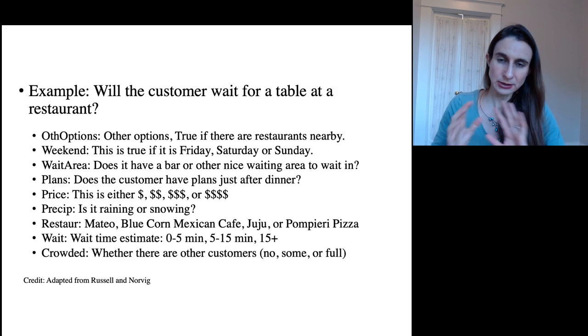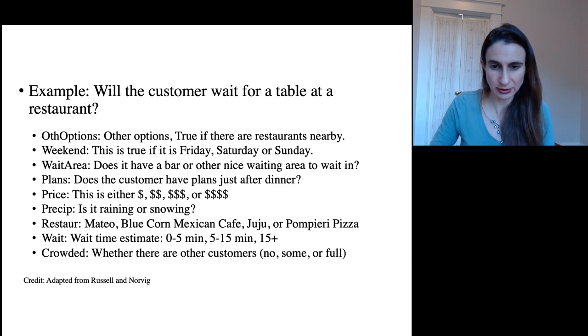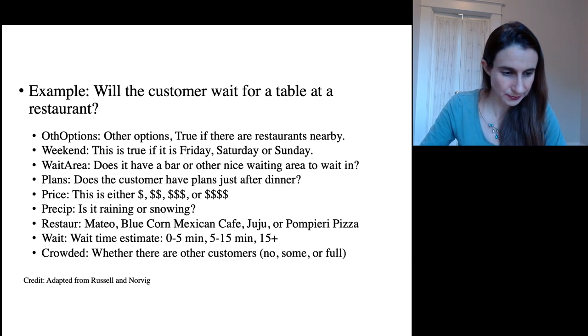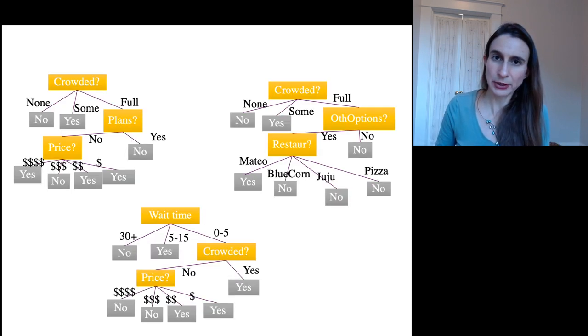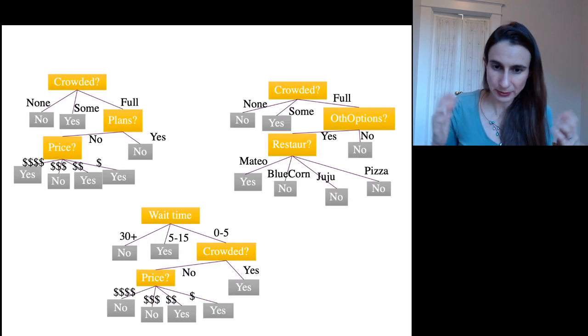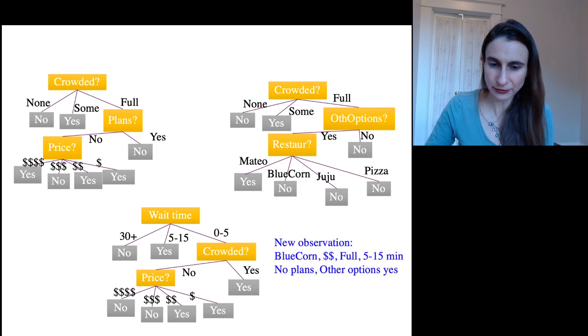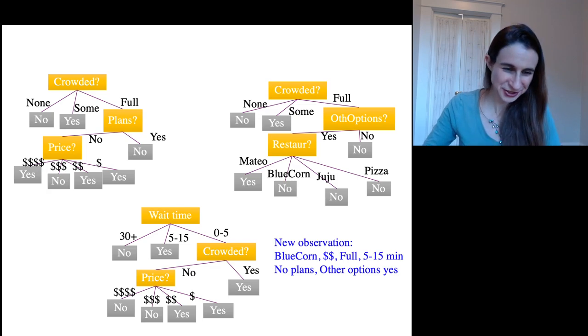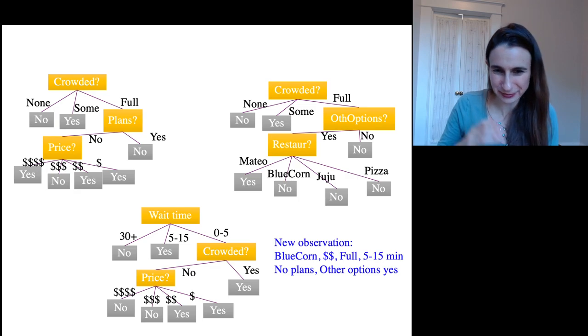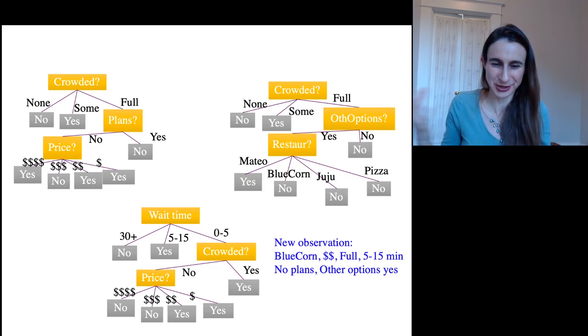So let's go back to this example of predicting whether a customer will wait for a table at a restaurant, given these various features. Let's say that we built three trees from our bootstrap resamples. And we have a prediction we want to make for some customers who've walked into Bluecorn Cafe. Here are the features. Bluecorn is not that expensive, but it's full. There's customers everywhere. There's a 5 to 15 minute wait. The customer doesn't have any plans, and there's other options nearby because Bluecorn is on a block with lots of restaurants.